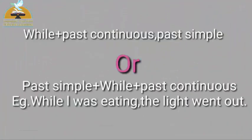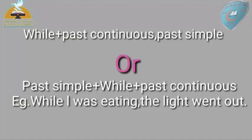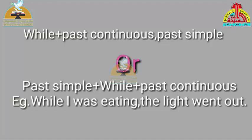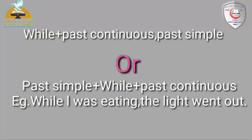While: when we use 'while', we put after 'while' the past continuous and the other sentence in the past simple. When we put 'while' in the middle of the two sentences, the first sentence is in the past simple and the other sentence is in the past continuous. Example: